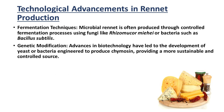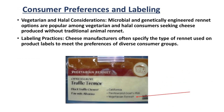The use of fermentation techniques and genetic modification to produce rennet are advancements of the cheese industry. Microbial rennet is often produced by controlling the fermentation process using fungi like Rhizomucor or bacteria such as Bacillus. Advances in biotechnology have led to the development of yeast or bacteria engineered to produce chymosin, providing a more sustainable and controlled source. Microbial and genetically engineered rennet options are popular among vegetarian and halal consumers seeking cheese produced without traditional animal rennet.